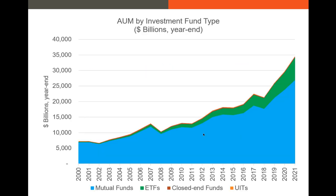Looking at assets under management by investment type going back about 20 years, mutual funds in blue dominate this market — the total AUM in mutual funds is enormous. It's only recently that we've seen an increase in ETFs. For the first time, more assets are now passively managed than actively managed. A small portion of total AUM is in closed-end funds and UITs, ETF AUM is increasing, and mutual funds are losing market share — though there's huge diversity in mutual funds, with some actively and some passively managed.